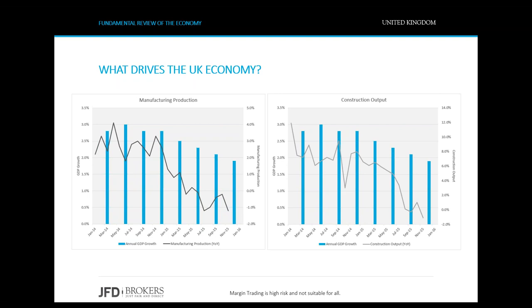Two other significant sectors that affect the GDP in the UK are the manufacturing and the construction sectors. Of course, it's a valid point that these two sectors affect each other. If construction is down, the need for manufacturing products is down too, and the opposite. Similarly, if a lot of buildings are constructed, there is an increased need for materials, furniture, and many other things. However, I thought it interesting to take a look at how manufacturing production on the left chart and construction output on the right chart perform in relation to GDP growth.